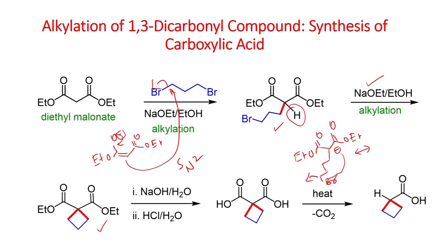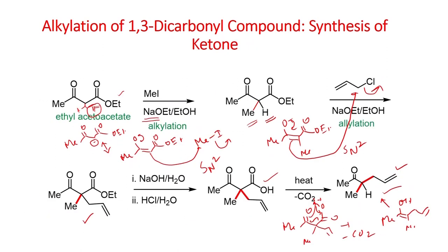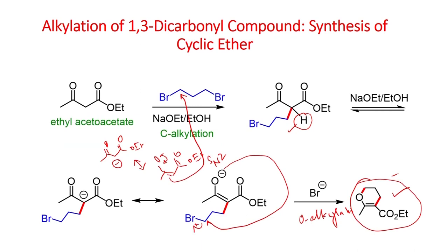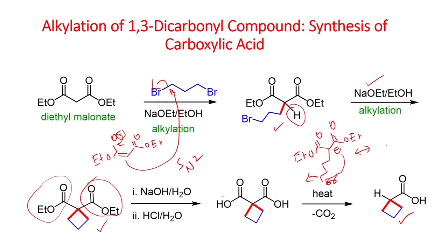So, you form the cyclobutane derivative. Once you form this one, as we have seen earlier, you can do hydrolysis of this ester group; this hydrolysis can generate the carboxylic acid, and when you heat the carboxylic acid it can undergo decarboxylation to give this cyclobutane carboxylic acid. In the first case we have seen two different alkyl halides — methyl iodide and allyl chloride; in the second example, intermolecular followed by intramolecular alkylation gave the cyclic ether; here also intermolecular followed by intramolecular alkylation takes place, both via SN2 pathway.